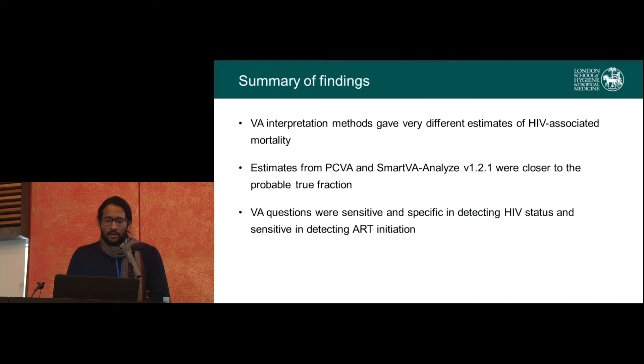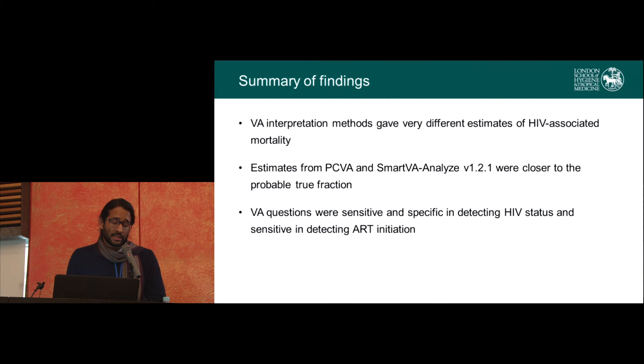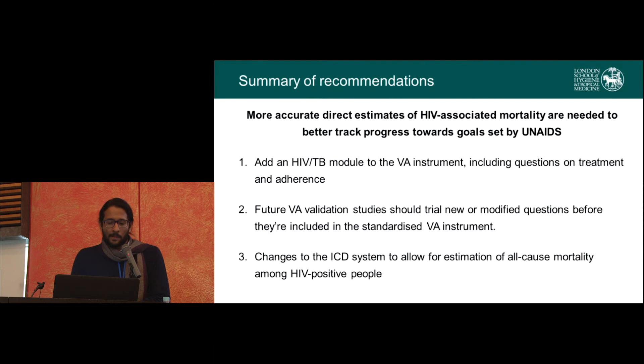In summary: VA interpretation methods were not particularly consistent in assessing HIV-associated mortality, particularly among HIV-positive people. But the newer versions of SmartVA Analyze did perform much better. VA questions in general were sensitive and specific in detecting HIV status and sensitive for ART initiation. This is part of a bigger picture that says we need to do better at measuring cause-specific mortality in low- and middle-income countries, and particularly among HIV-positive people.